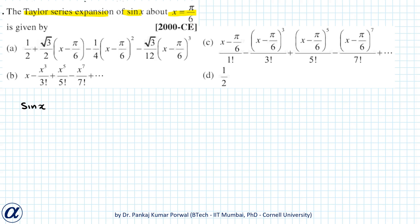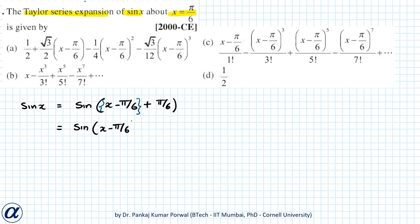So let's write sin(x) equals sin((x minus pi by 6) plus pi by 6). We keep these two terms together and pi by 6 separately, and do the trigonometric expansion. This gives sin(x minus pi by 6) cos(pi by 6) plus sin(pi by 6) cos(x minus pi by 6).